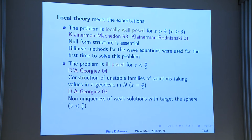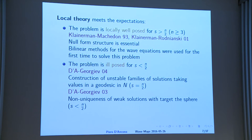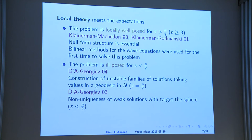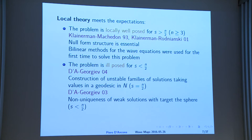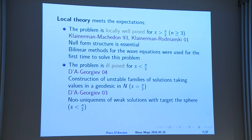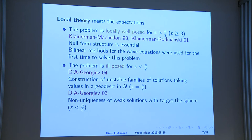Essentially, if s is strictly larger than n/2, you get local well-posedness. This was proved — probably the first application of the bilinear method in the context of wave equations — by Klainerman and Machedon, and then perfected with Rodniansky. On the other hand, the situation for s smaller than n/2 did not receive a lot of attention.